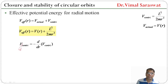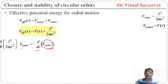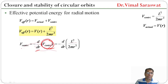Since the relation between force and potential energy is F = −dU/dr, the centrifugal force is F_centrifugal = −d/dr of V_centrifugal. Since V_centrifugal = l² / (2mr²), we get F_centrifugal = −d/dr of l² / (2mr²).